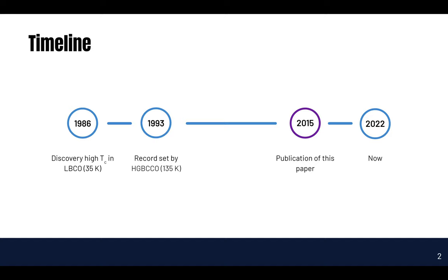We will start with a brief timeline. In 1986, high temperature superconductivity was discovered in LBCO at 35 Kelvin. Then a lot of researchers started studying the cuprates, and only seven years later in 1993 the record temperature was set by HGBCCO at a temperature of 135 Kelvin. Since then a lot more research has been done, and in 2015 this paper was published, which basically summarizes our understanding of the cuprate superconductors.